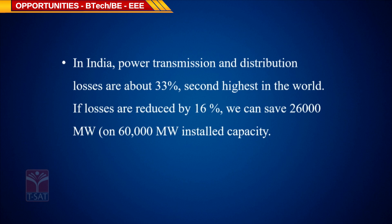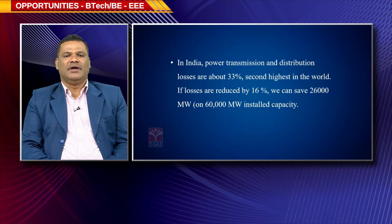India's power transmission and distribution losses are about 33 percent — the second highest in the world. If the losses are reduced by 16 percent, we can save 26,000 megawatts on an installed capacity of 60,000 megawatts. Nothing but saving 33 percent of power means you are reproducing or generating power. Stopping electricity loss is nothing but saving power.